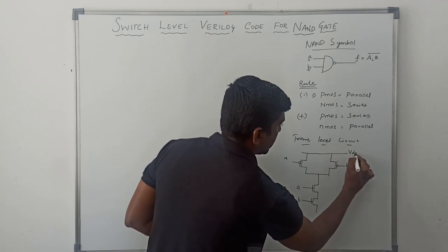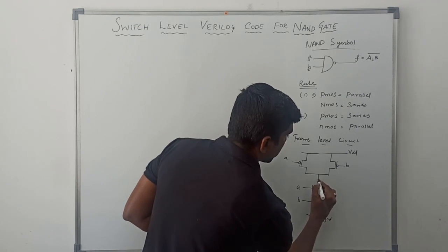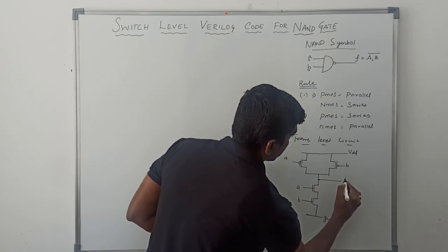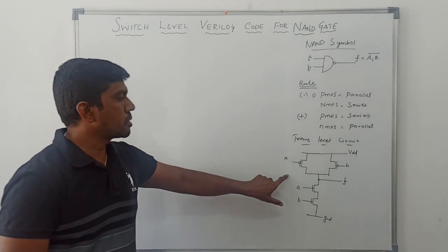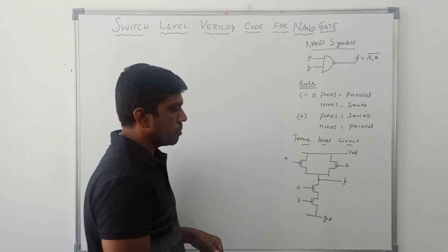This one is VDD. This one is ground. The output is taken from here, output is F. It is a transistor level circuit for this NAND gate. Using this structure, I am going to write the program.